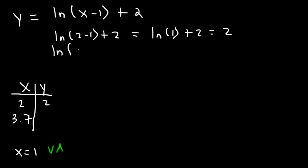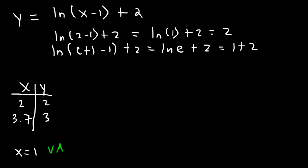Now 3.7 represents e plus 1. So if we replace x with e plus 1, e plus 1 minus 1 is basically just e. The ones cancel. And ln e is always 1. And 1 plus 2 is 3. So we now have everything we need to graph it.